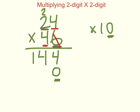Just like with the ones place value, I'm going to multiply this four times this four. Four times four is sixteen, so I'm going to put a six here and carry my one.